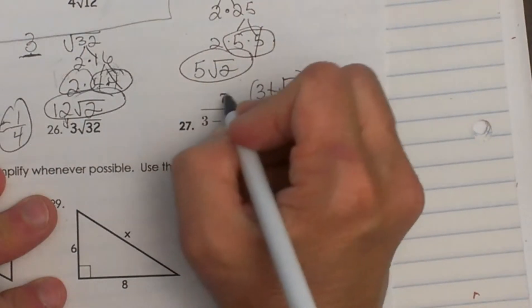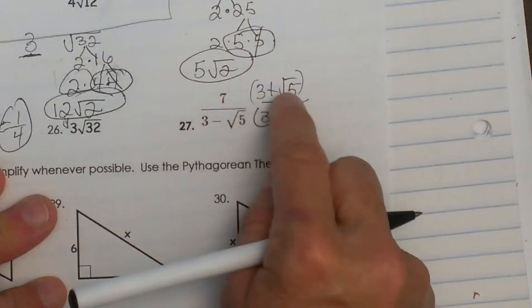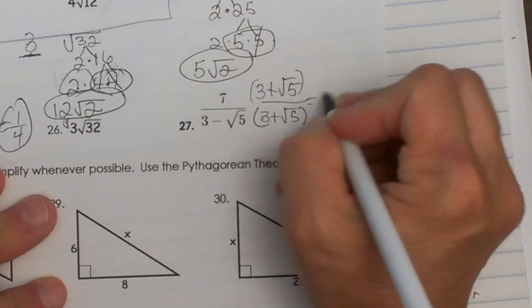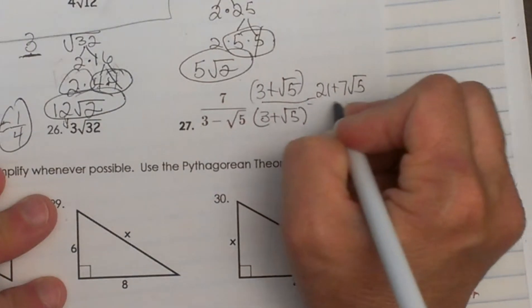So the top we're just going to distribute. You're going to distribute 7 times 3 and 7 times the square root of 5, so you get 21 plus 7 square root of 5.